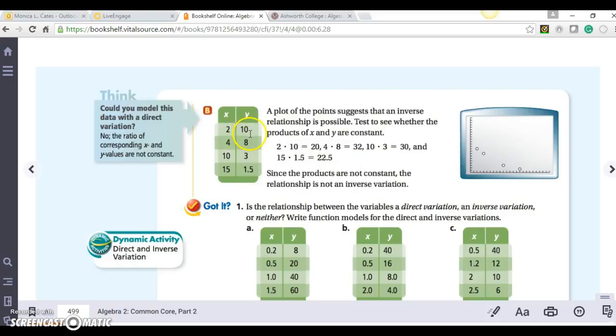They plotted it first, and notice that it's not a straight line. We have 2 times 10 is 20, 4 times 8 is 32, 10 times 3 is 30, and 15 times 1.5 is 22.5. Since the products are not constant, the relationship is not an inverse variation.